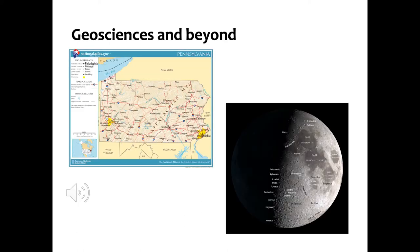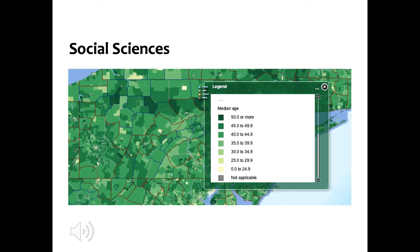For academic content, geosciences obviously comes to mind from geography to geology to crater mapping on the moon and beyond. Maps are notable for being able to simultaneously show different layers such as roadways, cities, bodies of water, and geological features such as in this map of Pennsylvania. Sociology, political science, and other social sciences rely heavily on maps.